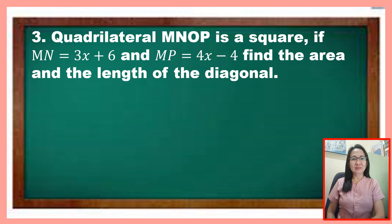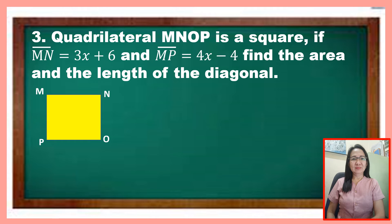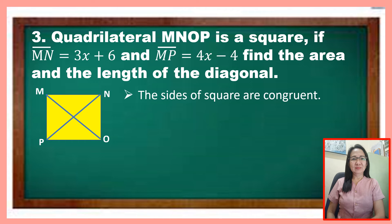Quadrilateral MNOP is a square. If side MN is represented as 3x plus 6 and side MP is equal to 4x minus 4, find the area and the length of the diagonal. Let us draw the square named MNOP with diagonals MO and PN. What important information is necessary to solve the problem? The sides of a square are congruent, so side MN equals side NO equals side OP equals side MP.